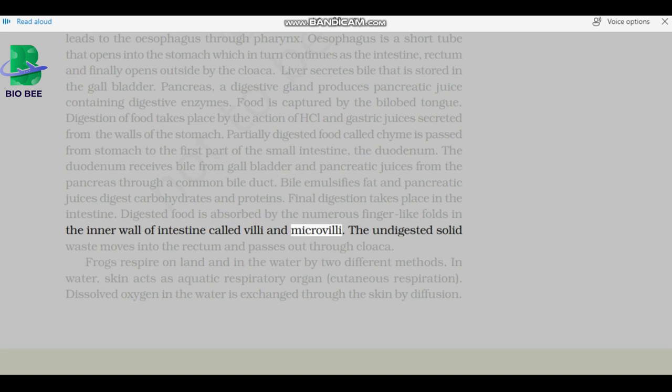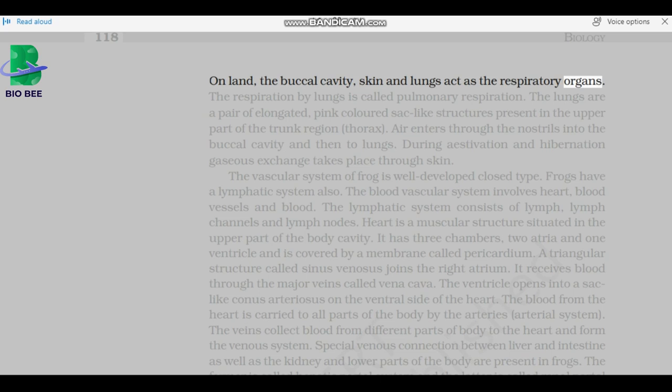The digested solid waste moves into the rectum and passes out through cloaca. Frogs respire on land and in the water by two different methods. In water, skin acts as aquatic respiratory organ, cutaneous respiration. Dissolved oxygen in the water is exchanged through the skin by diffusion. On land, the buccal cavity, skin and lungs act as the respiratory organs. The respiration by lungs is called pulmonary respiration. The lungs are a pair of elongated, pink-colored sac-like structures present in the upper part of the trunk region, thorax. Air enters through the nostrils into the buccal cavity and then to lungs. During aestivation and hibernation, gaseous exchange takes place through skin.